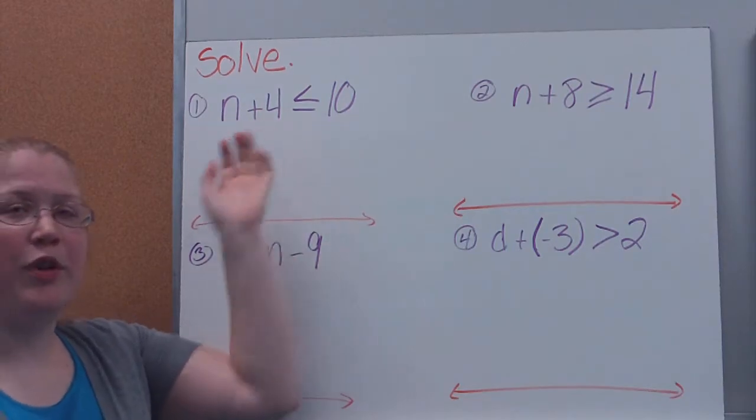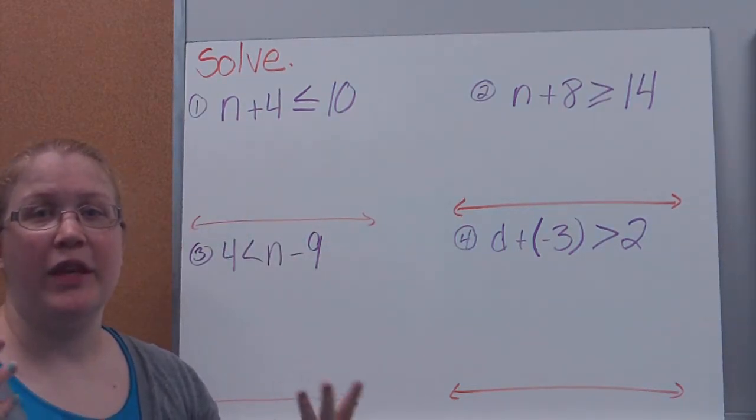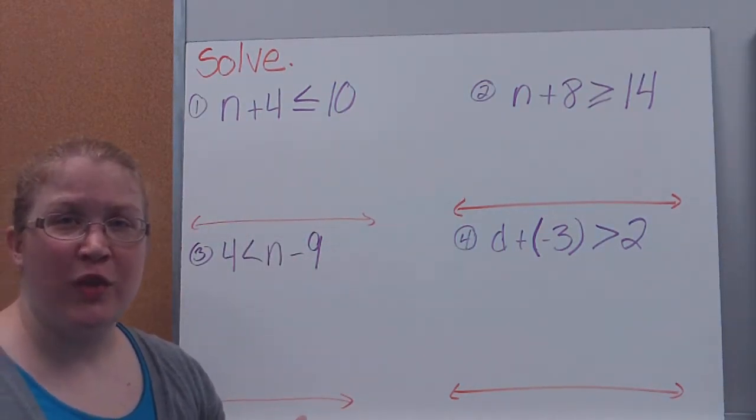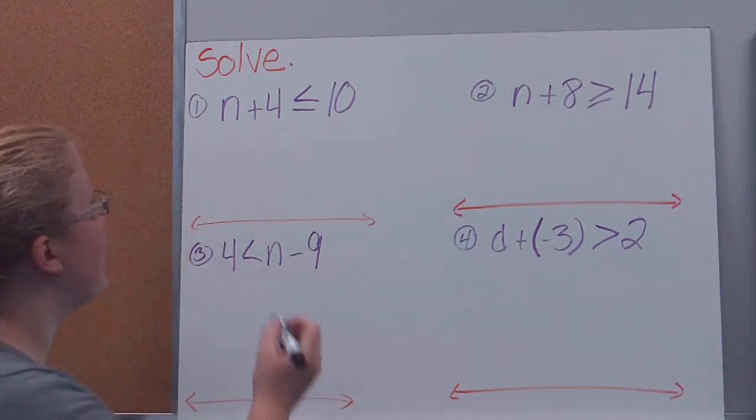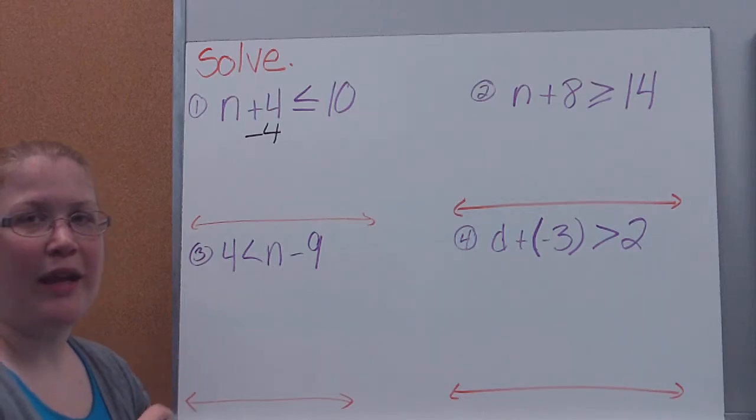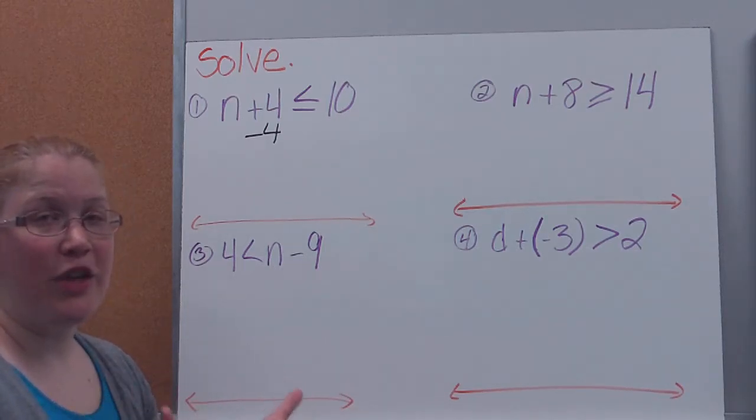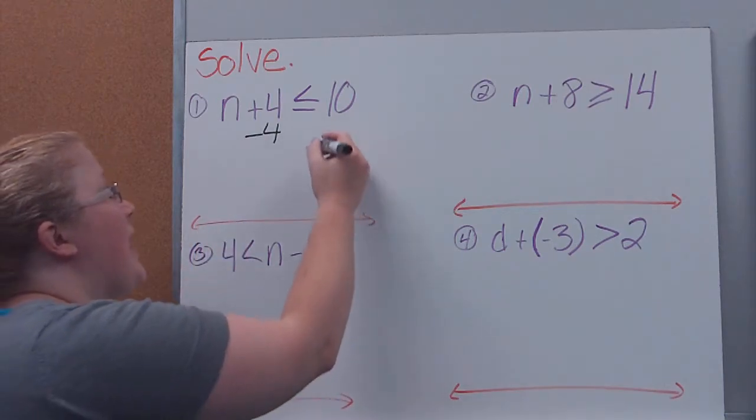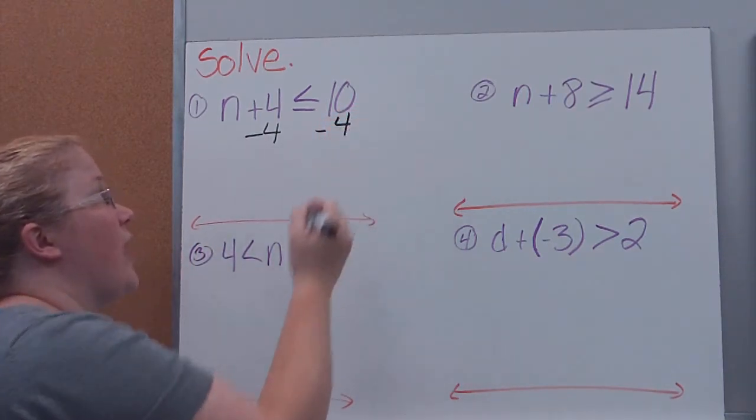I have a variable over here. What operation is happening to my variable? Addition. How am I going to undo that addition? I'm going to use the inverse operation, which is subtraction. So to get the variable by itself, I'm going to subtract that number away. Now remember, we need to keep it balanced because I want to make a true statement. So whatever I do to the one side, I need to do to the other side.